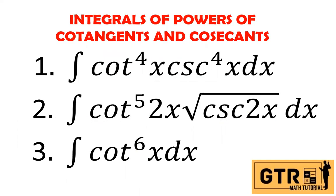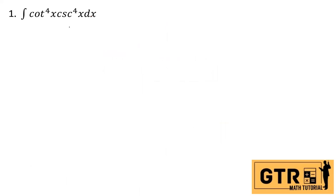I have three examples, one for each case. Try to answer first on your own before watching my solution. Let's start with number 1: the integral of cotangent to the fourth x times cosecant to the fourth x dx. We will use Case 1 because the exponent of cosecant to the fourth is an even number greater than 2.